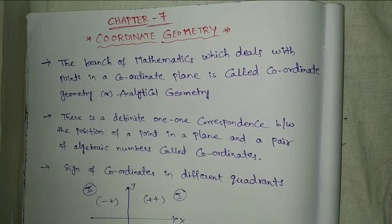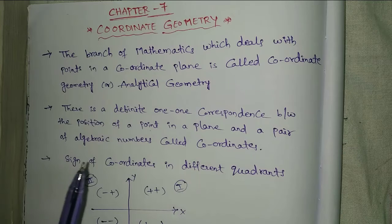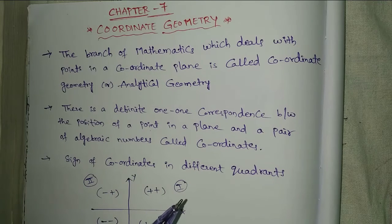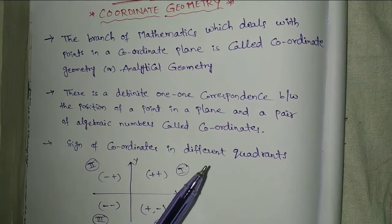There is a definite one-to-one correspondence between the position of a point in a plane and a pair of algebraic numbers called coordinates.